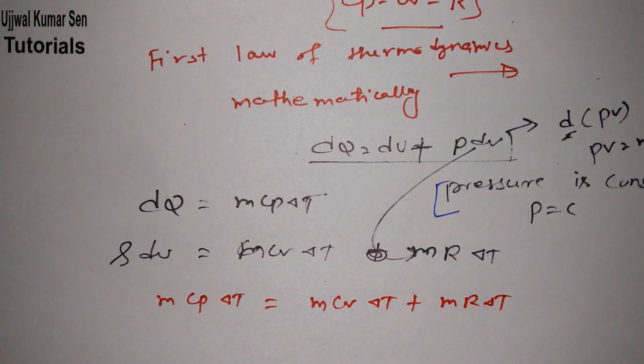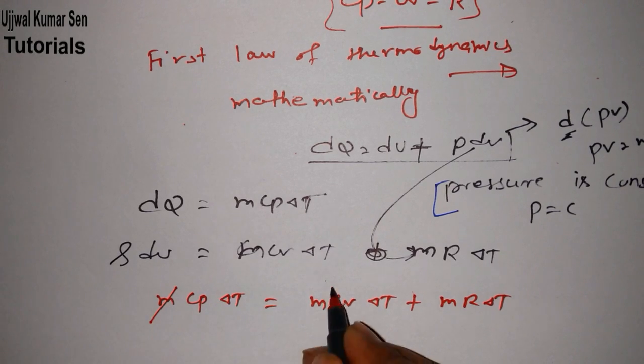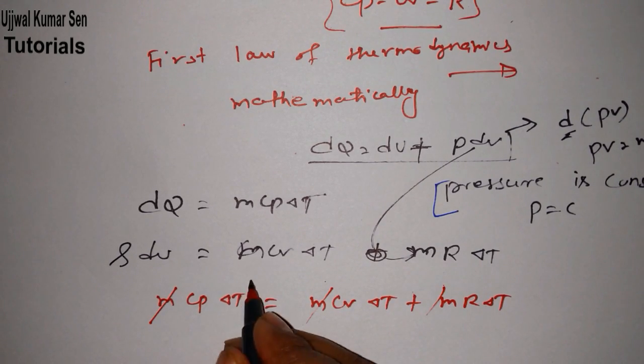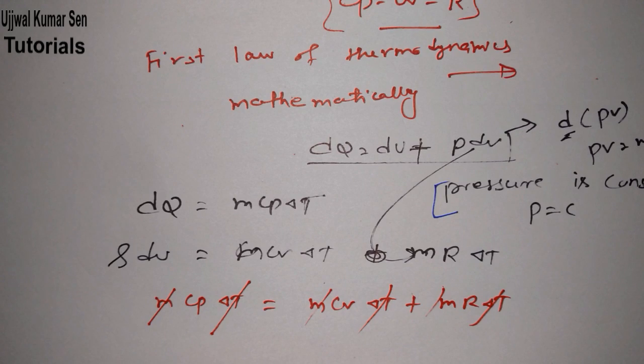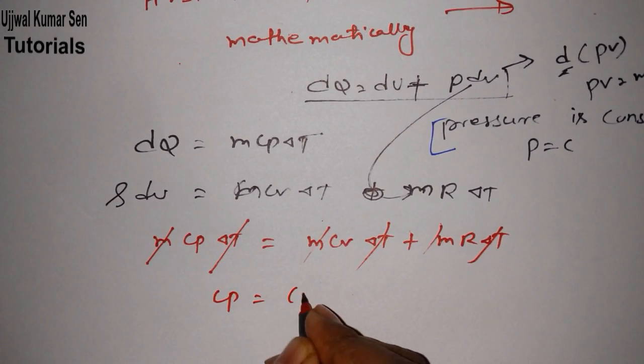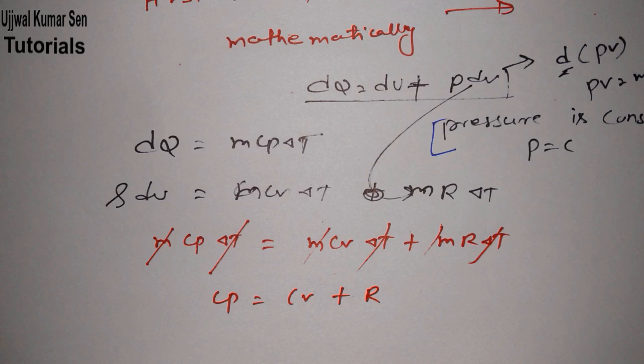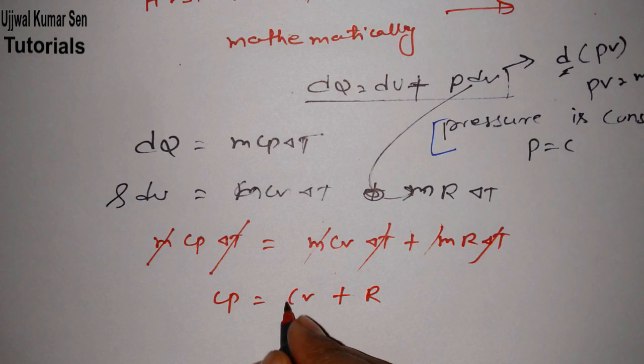So m Cp delta T is equal to m Cv delta T because of internal energy, we have to write Cv delta T, and plus mR delta T.